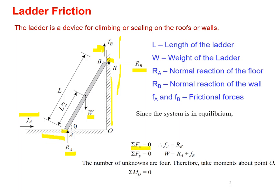Since the ladder is in equilibrium, we apply the equilibrium equations. First, applying summation of forces in the x-direction equal to zero: the forces acting in the x-direction are FA and RB, therefore FA equals RB.